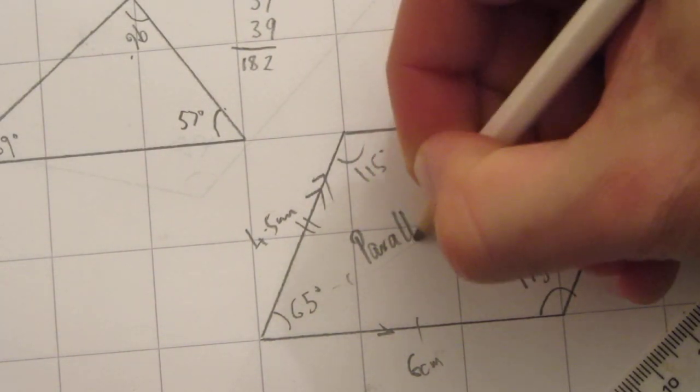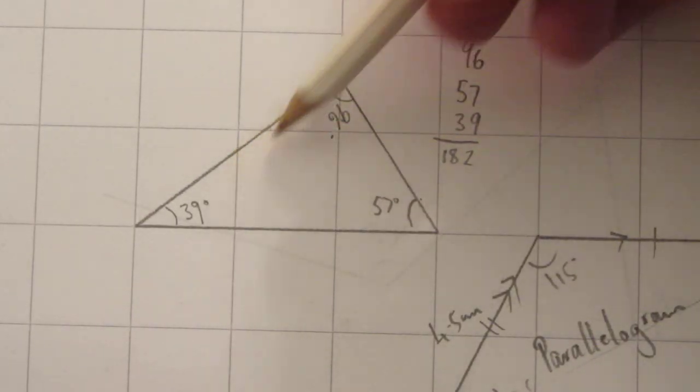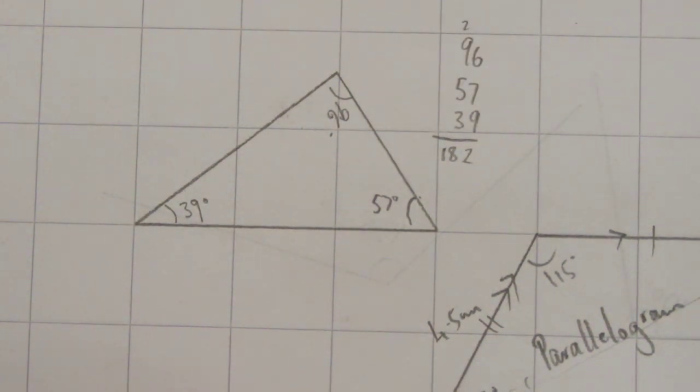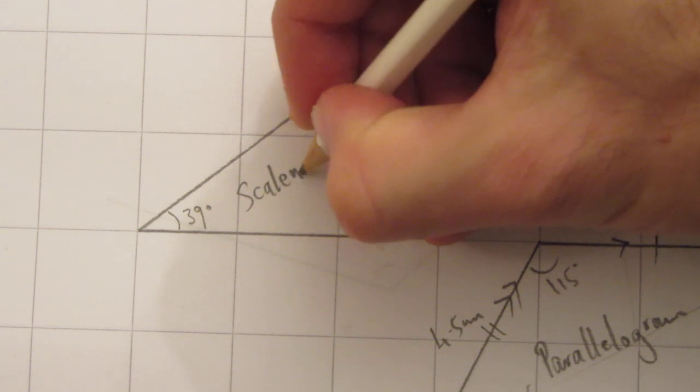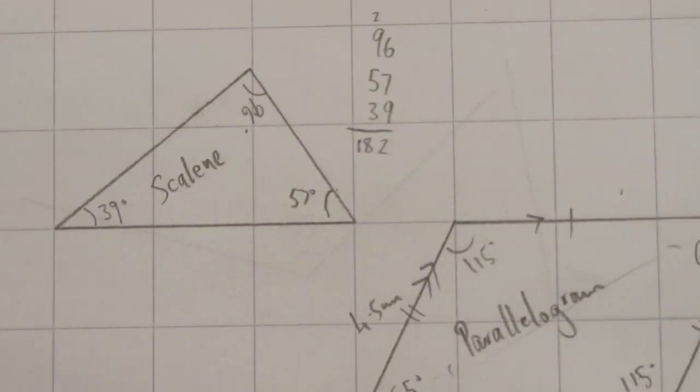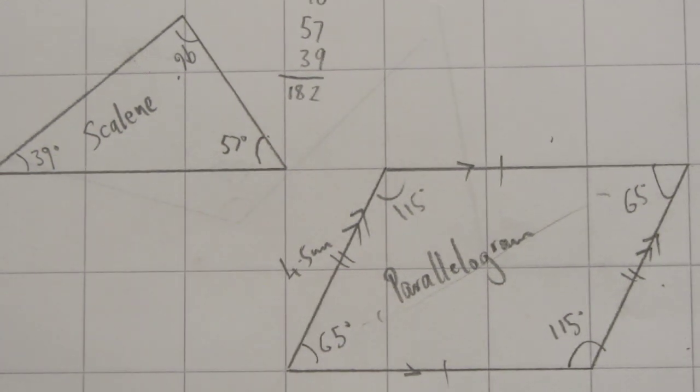Okay, it's a parallelogram. And what kind of triangle was this? All three angles are different. If you've got that kind of a triangle, then it's a scalene triangle. Right, there we go. Thanks very much for watching. That's how to find angles inside triangles and quadrilaterals. Bye!